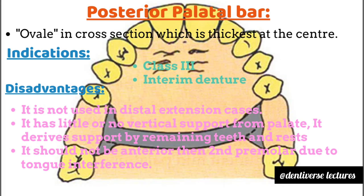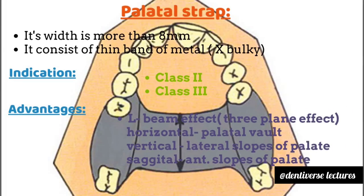Indications for the posterior palatal bar are class 3 RPD and interim dentures. Disadvantages are: it cannot be used in distal extension cases, it has little or no vertical support from the palate, it only derives support from the remaining natural teeth and rests, and it should not be placed anterior to the second premolar.